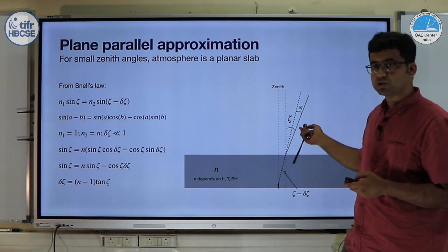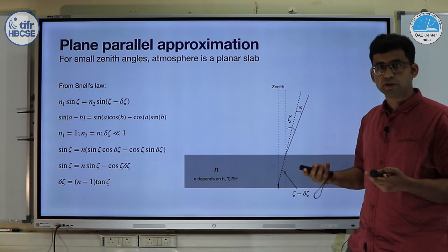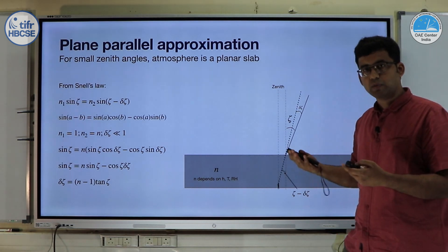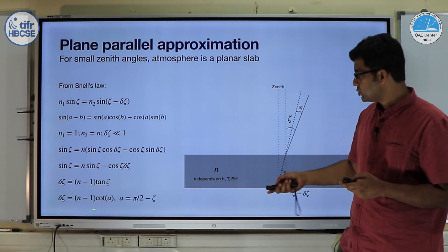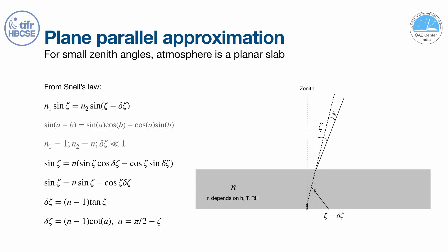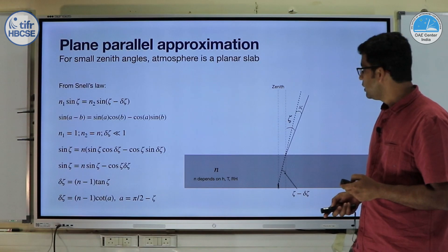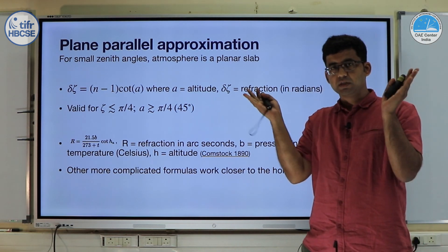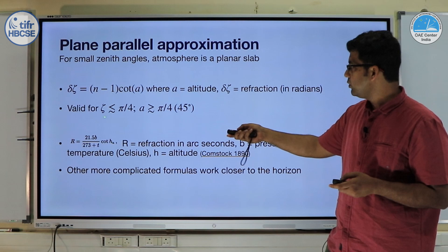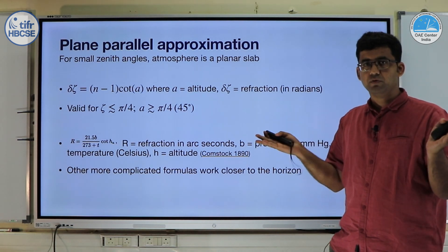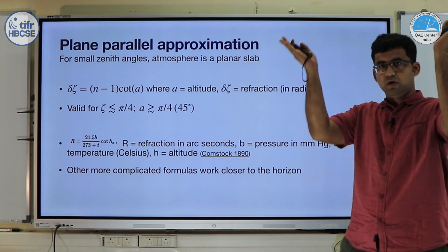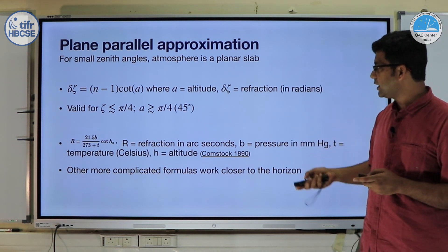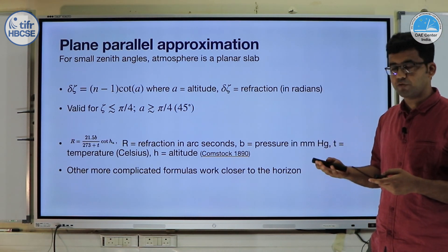This is in units of the zenith angle ζ. We can also express it in terms of altitude A, where A = 90° − ζ, giving δζ = (N − 1) cot(A). This expression is generally valid only for ζ less than π/4, i.e., where the altitude is greater than 45 degrees.